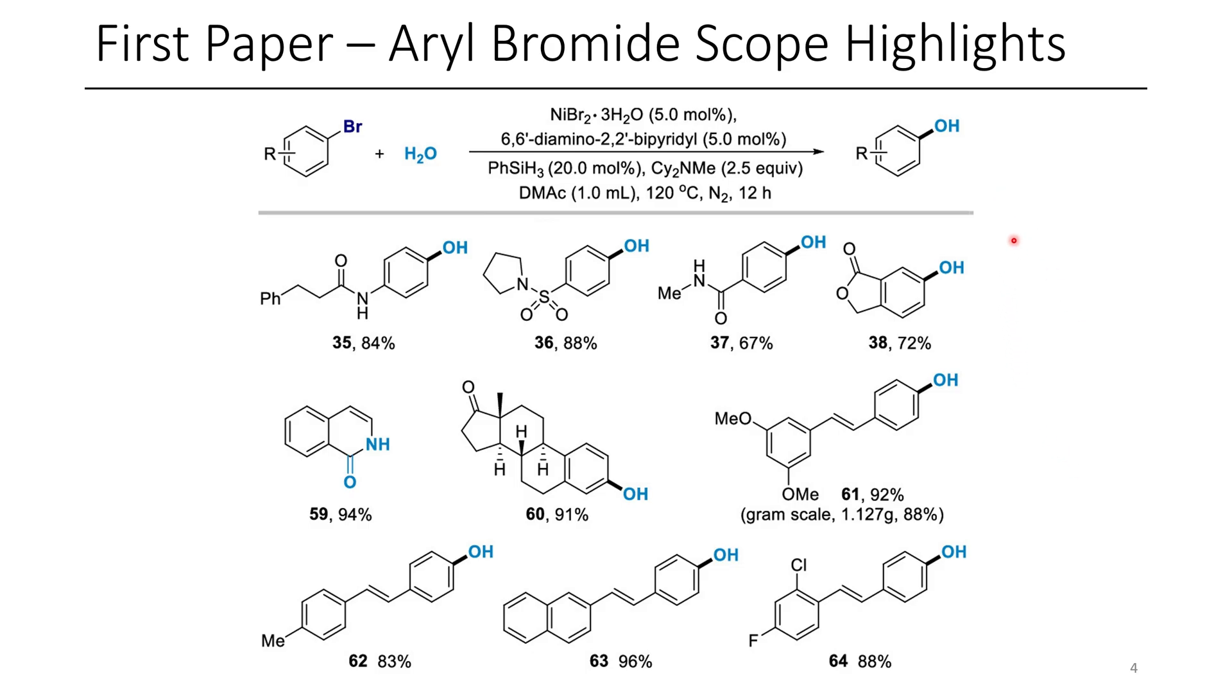They did find that aryl chlorides containing electron-rich methoxy groups were not able to be hydroxylated in the ortho- and para positions, but they did have some examples in their paper where they had meta-substituted methoxy arenes, and those were able to work all right. Here's an example where we still have an electron-rich system, but nonetheless, this aryl bromide was able to be converted to the corresponding phenol quite easily.